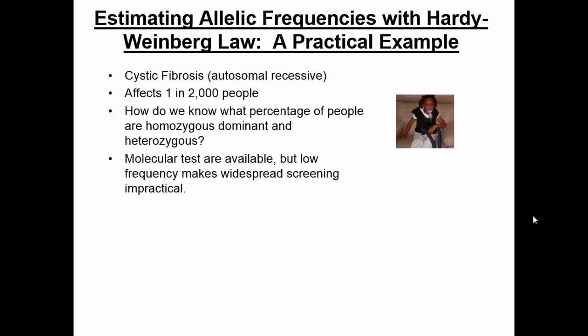This is an example of cystic fibrosis. It affects about 1 in 2,000 people and is very common in certain Caucasian populations. We want to figure out what percentage of people are homozygous dominant and heterozygous for this abnormality. It's passed on in an autosomal recessive fashion, so we already know how many homozygous recessive individuals there are because we can see the phenotype. It's the heterozygous and the homozygous dominant we're not sure of. Molecular tests are available, but it's impractical to test everyone, so we really have to look at certain populations.